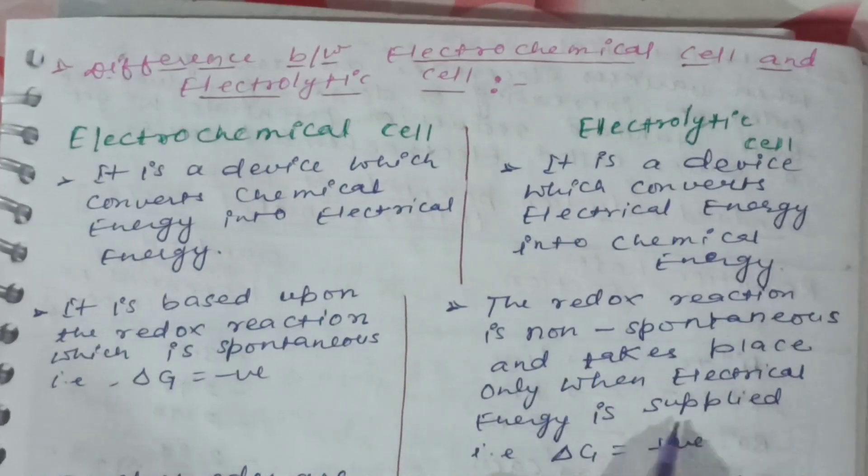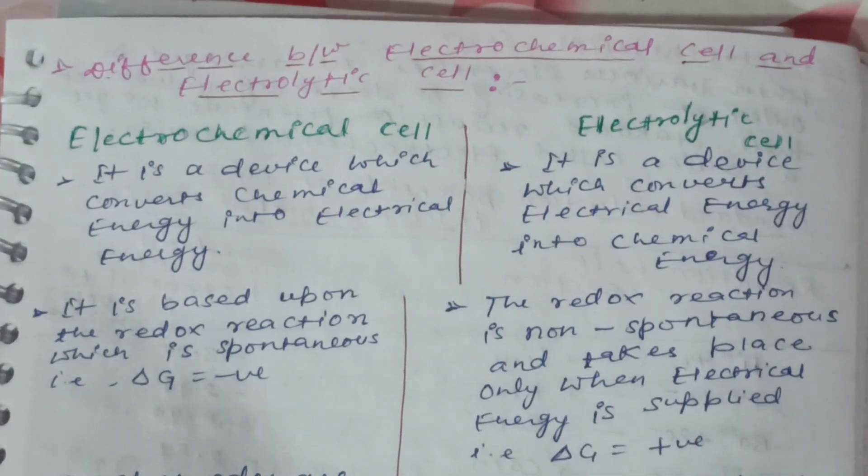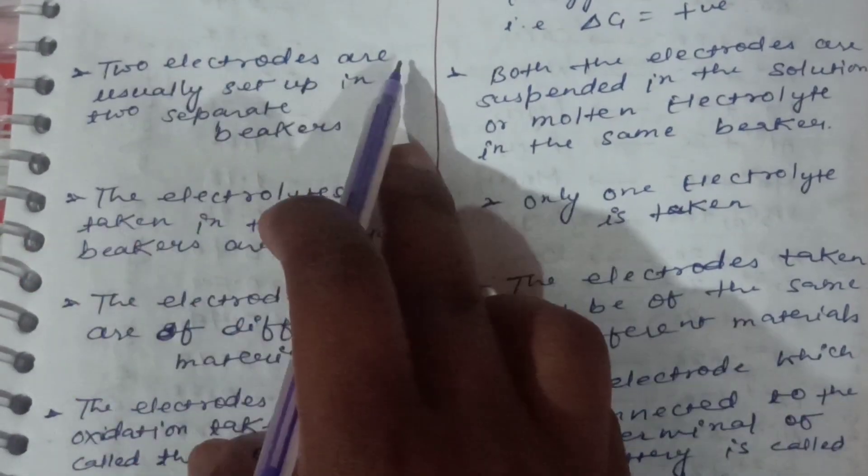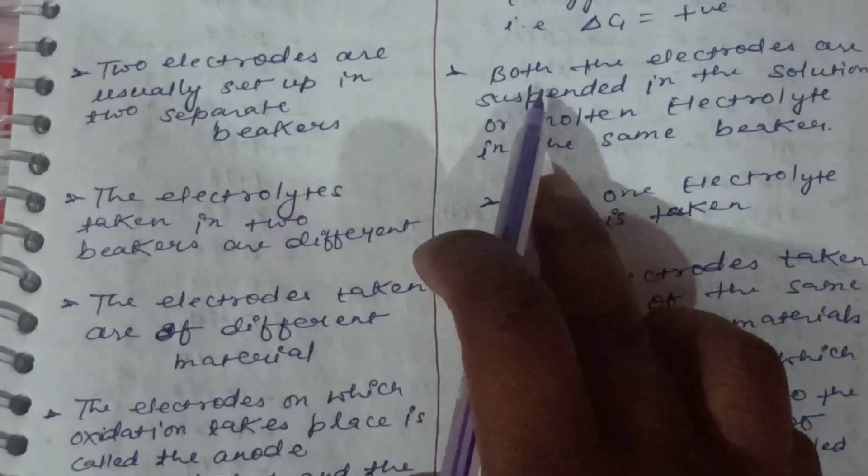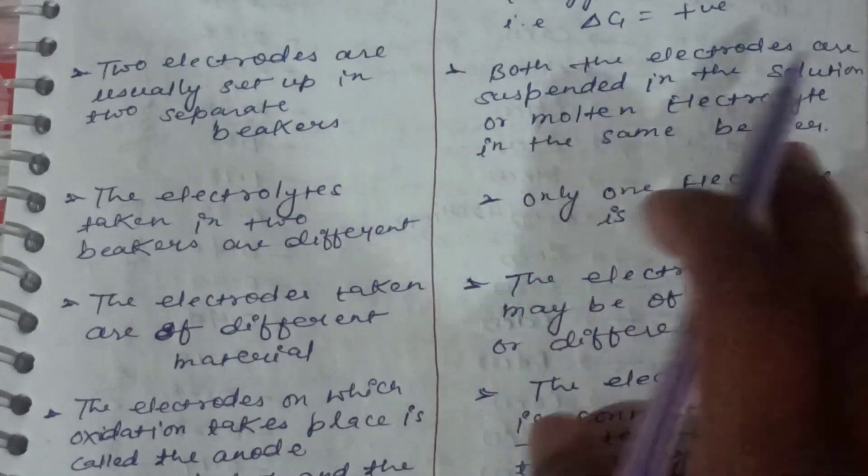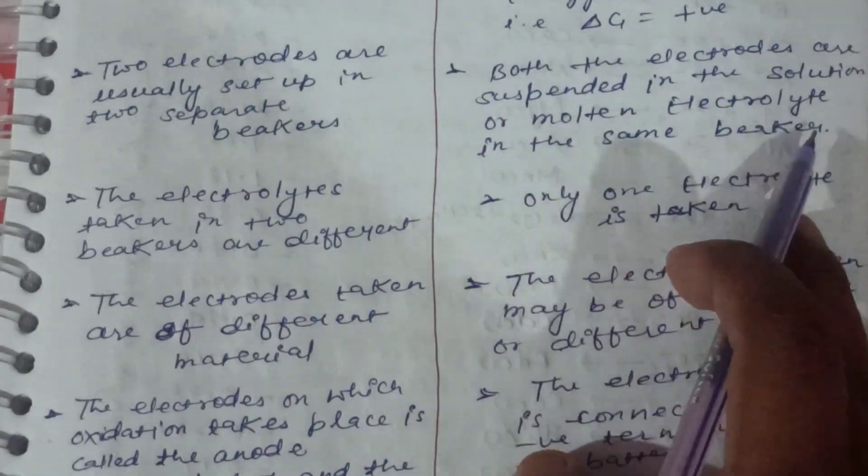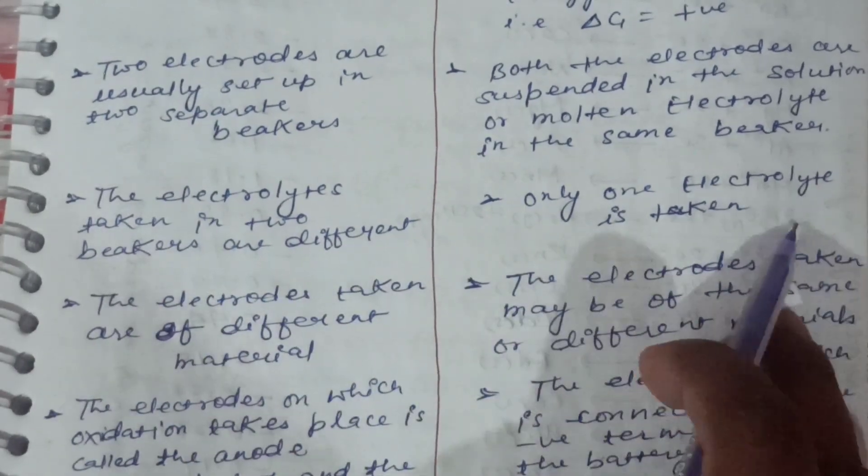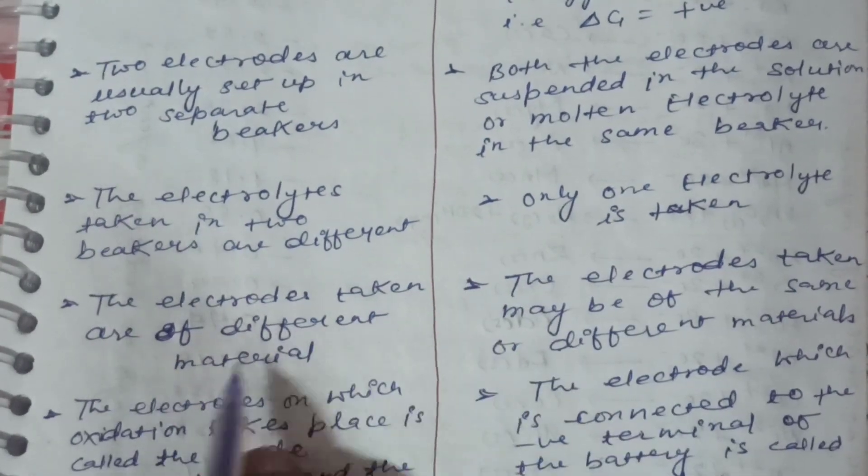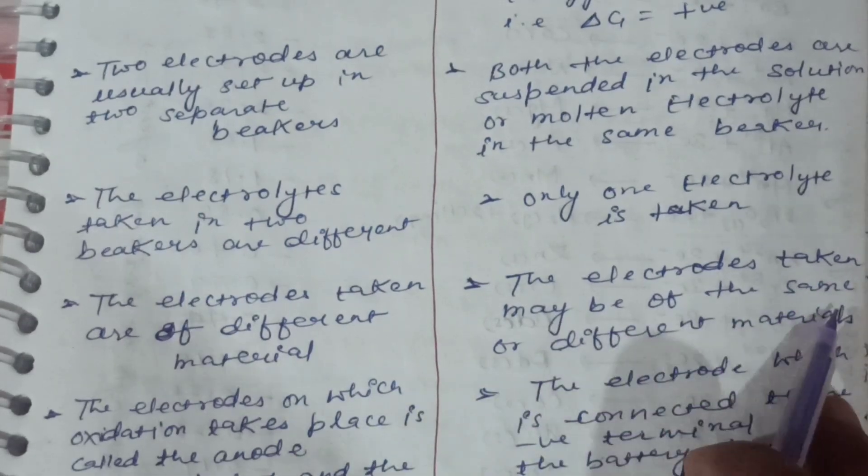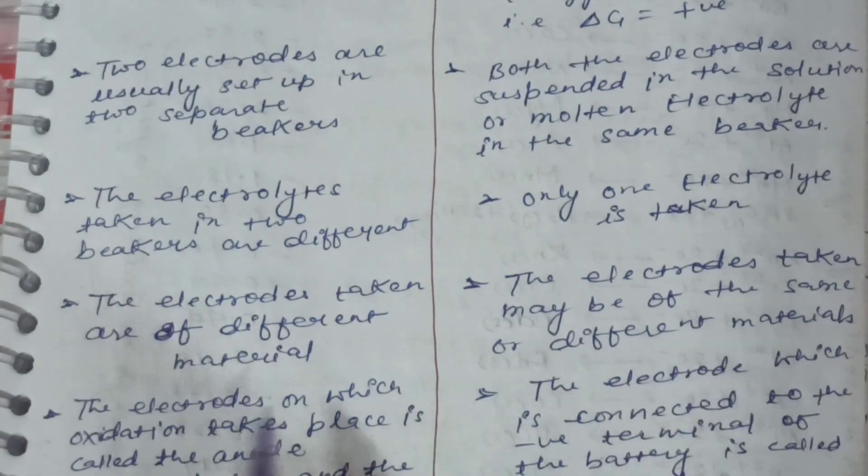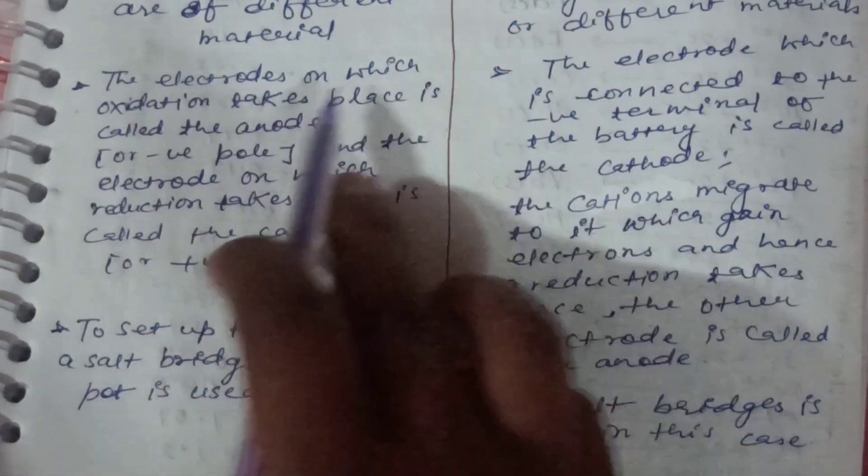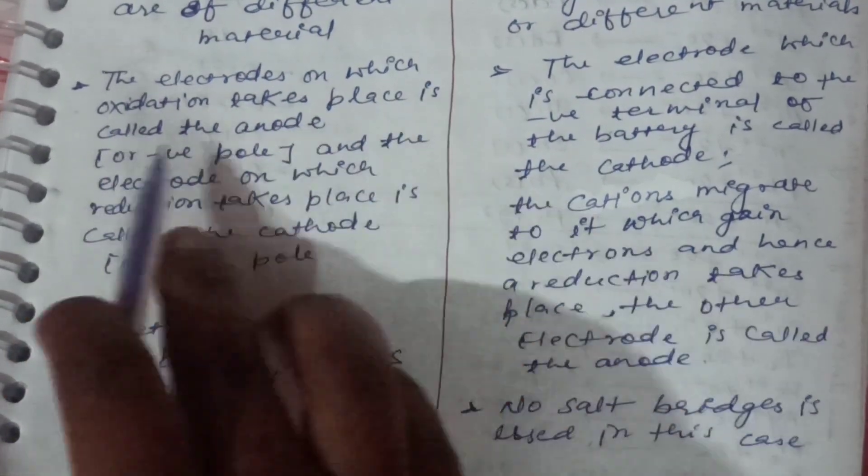Two electrodes are usually set up in two separate beakers. Both the electrodes are suspended in the solution or molten electrolyte in the same beaker. The electrolytes taken into beakers are different. Only one electrolyte is taken. The electrodes taken are of different material. The electrodes taken may be of the same or different material.